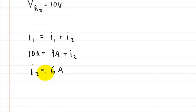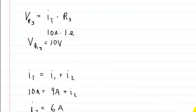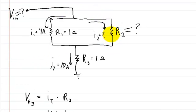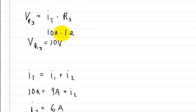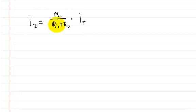Now how are we going to solve for R2? We can actually use the current divider rule. When solving for the current in a branch you use the ratio of the resistors: I2 is equal to R1 over (R1 plus R2) times the total current. We already know I2, R1, and the total current, so the only unknown is R2. We're going to use this equation to solve for R2.